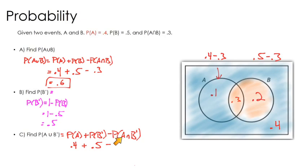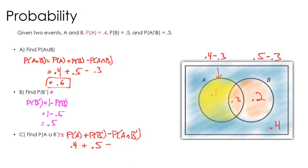Everything in the green color is not B, and I want to find where that intersects A. The part where that intersects A is right here — this region is A and it's also not B, because it's the part of A that is not included in B. This is just a fancy way of referencing the 0.1 we figured out in the very first step. So we have 0.9 minus 0.1, giving us 0.8.